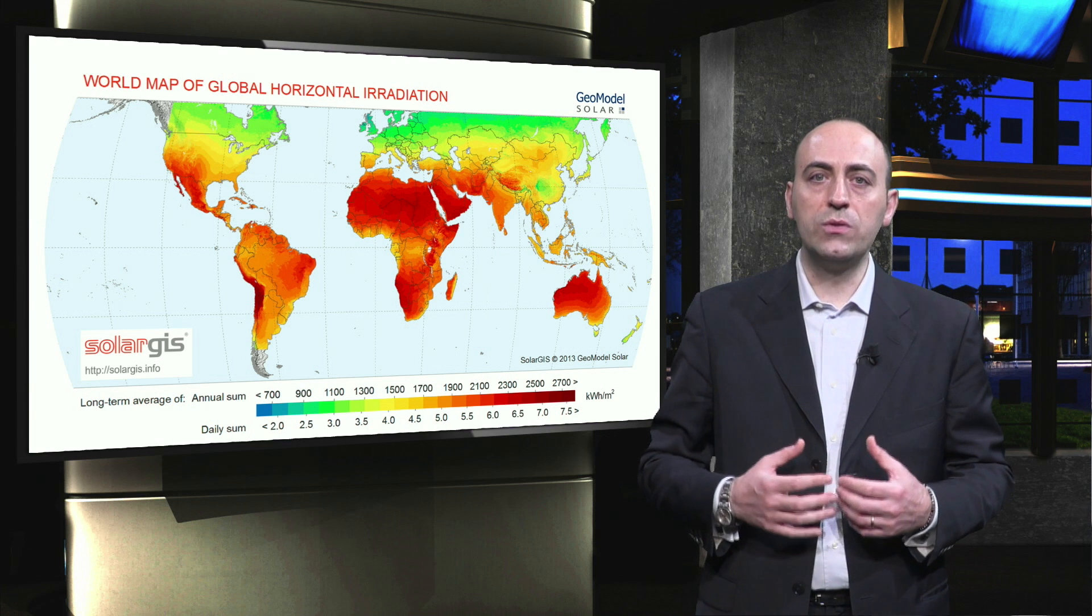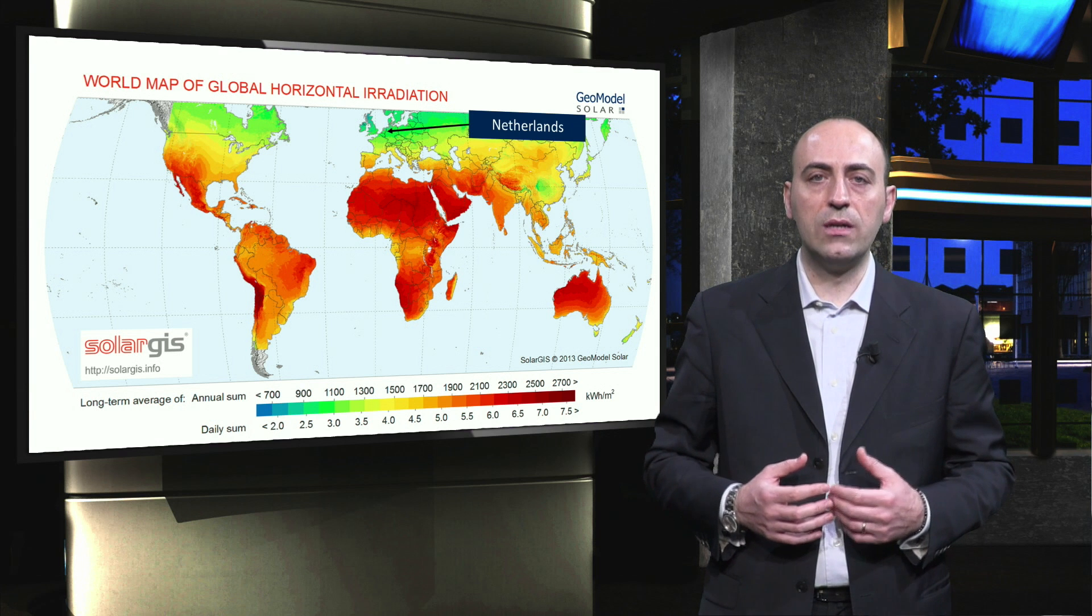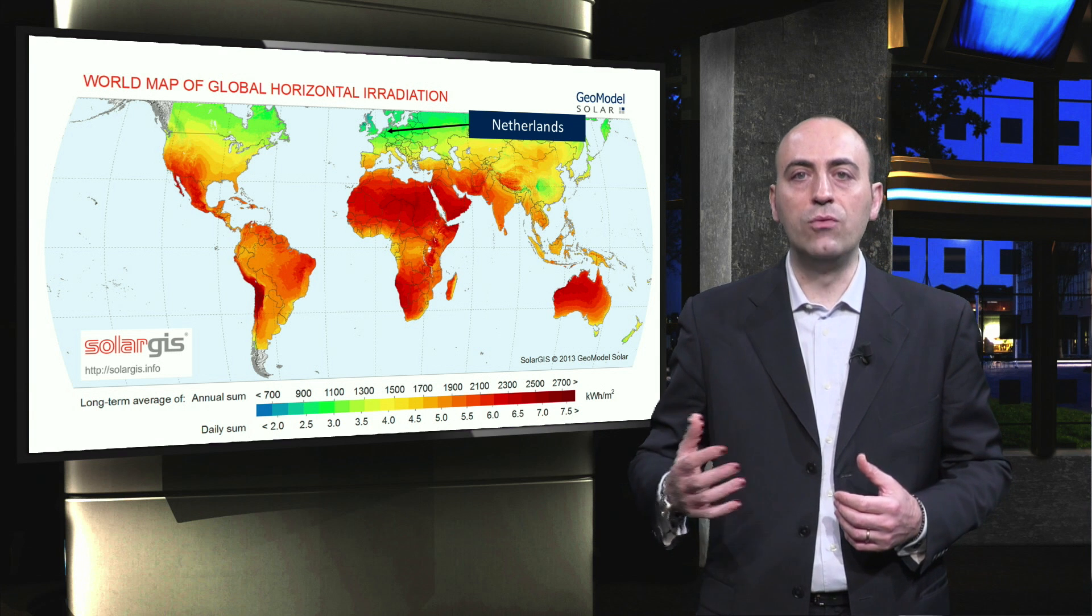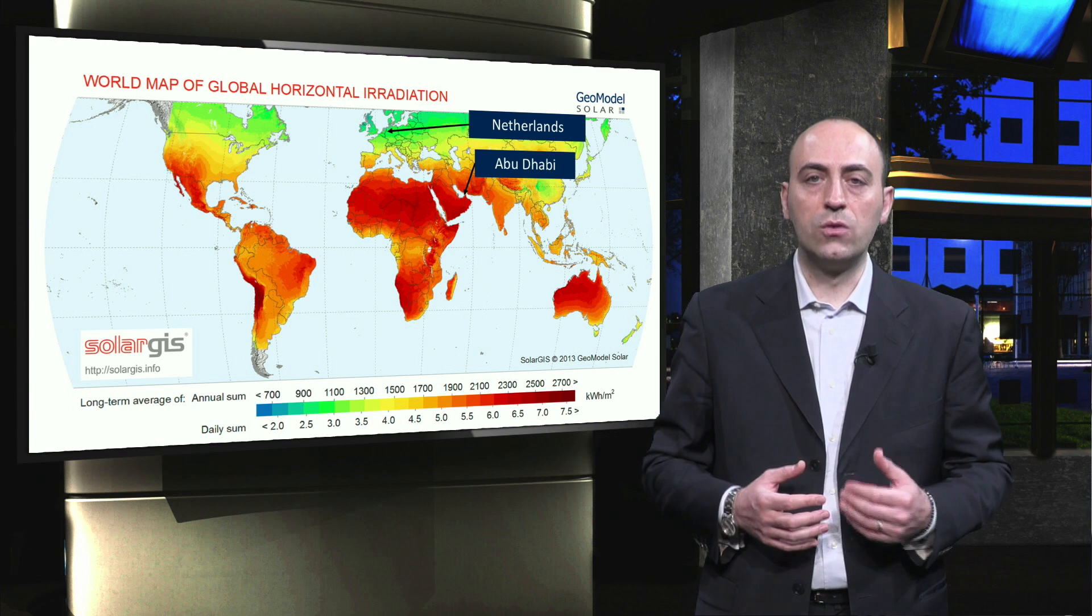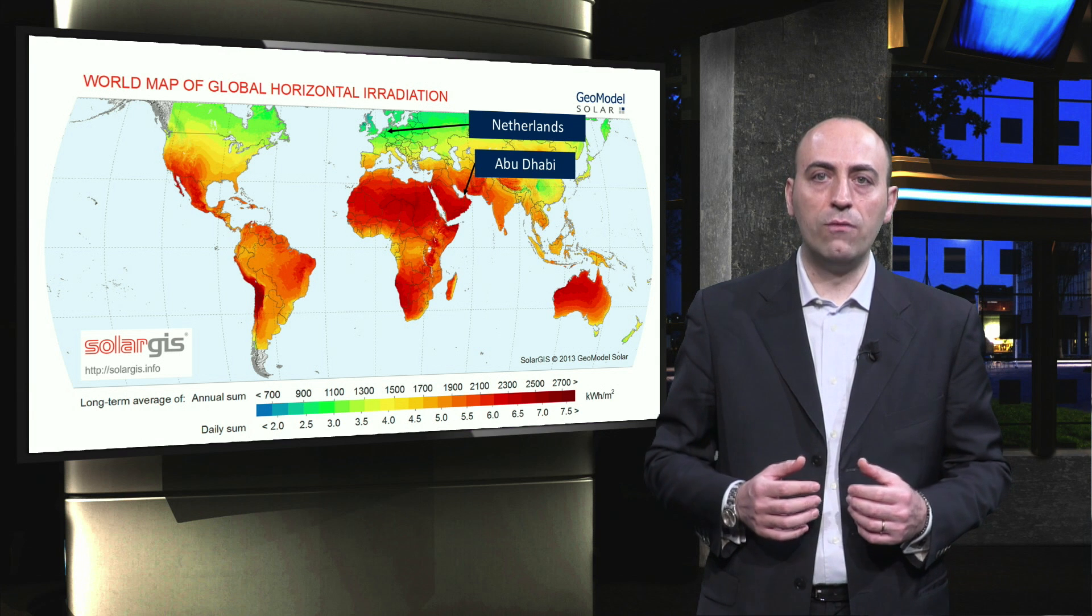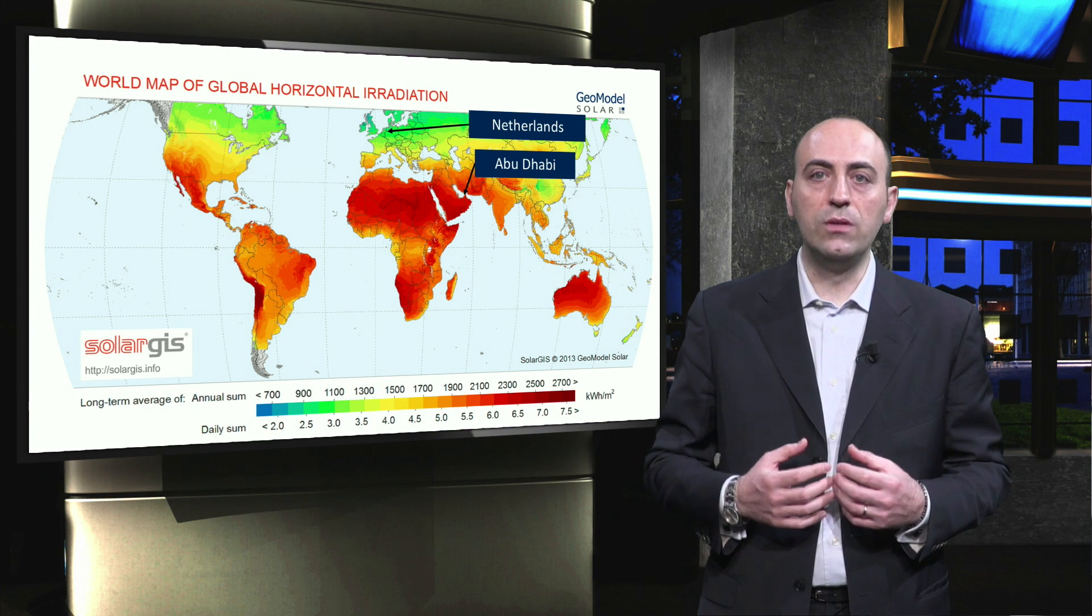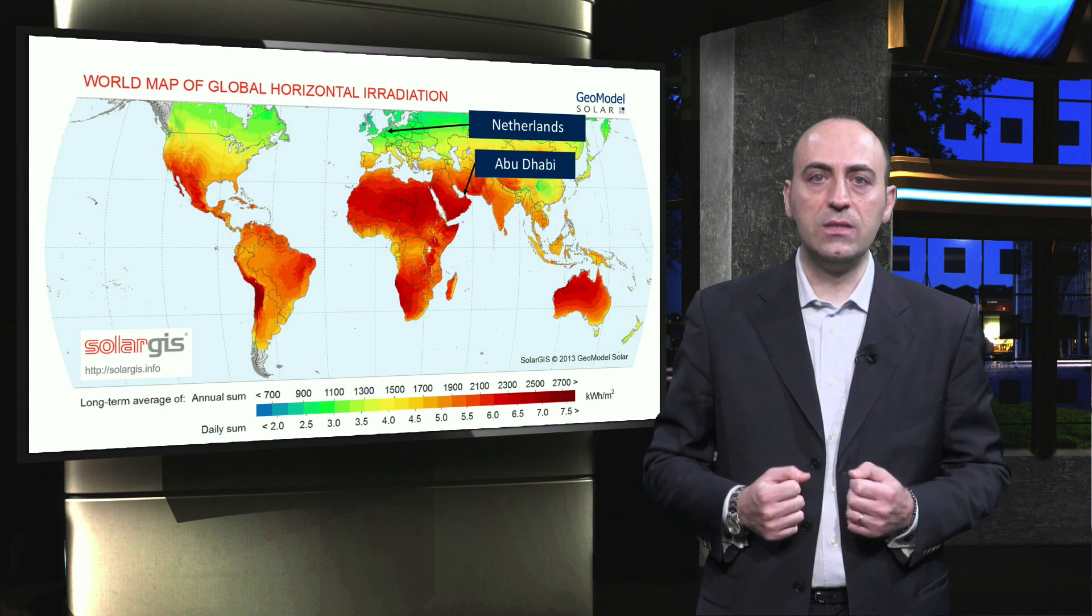If we want to produce the same amount of energy for two PV systems, one in the Netherlands, where the radiation is almost 1100 kilowatt-hour per square meter per year, and one in Abu Dhabi, where we have almost 2200 kilowatt-hour per square meter per year, then the number of PV modules in the Netherlands should be almost double the PV modules in Abu Dhabi. Thus, it is very important to look into the environment in which the PV system will be installed.